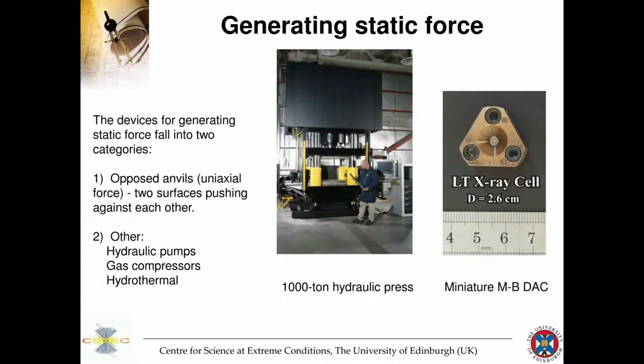In terms of generating pressures, you can find devices large and small. On a large scale, there are hydraulic presses which can generate 1,000 tons and more. On a small scale, there are screw-driven or thread-driven pressure cells that generate much lower force, but because the surface area is the surface of a diamond culet, the pressures generated are much greater. The common devices for generating static force are opposed anvils, where you have uniaxial force with two surfaces pushing against each other and a compressing pressure medium in between. Others include hydraulic pumps, gas compressors, and hydrothermal cells.